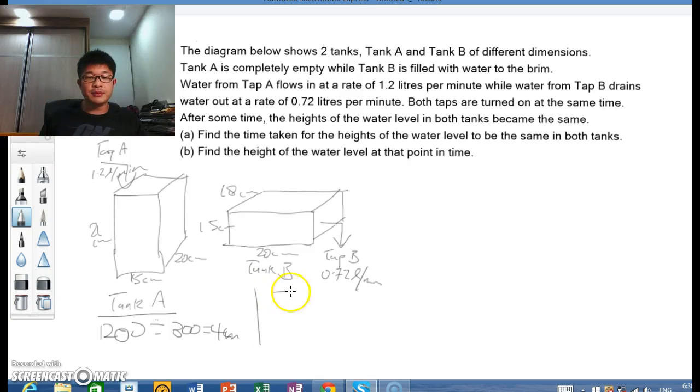However, for tank B, there is an outflow of 0.72 liters per minute, so it's 720. You divide by the base area of 18 times 20. This 18 should have been placed here. I'm just taking it from the question itself. So it should be 360. The answer will be 2 cm. So there is a decrease of 2 cm every minute.